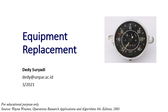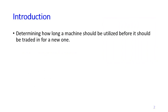Another type of problem that we may solve using the dynamic programming approach is the equipment replacement problem. In this problem, we need to determine or decide how long we should use a machine before we trade it or replace it with a new one.